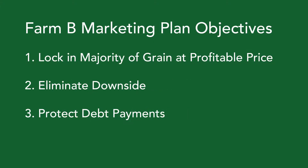Farm B's possible objectives include: lock in all or a major part of expected production at the current price but provide for the possibility of upside potential. If they can lock in $4.80, then Farm B can protect the downside for the entire expected crop and follow a scale-up approach if prices continue to rise.